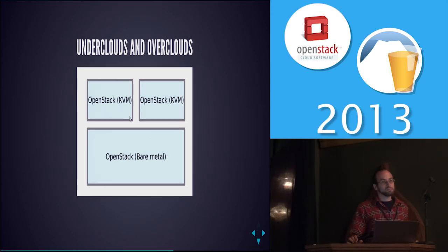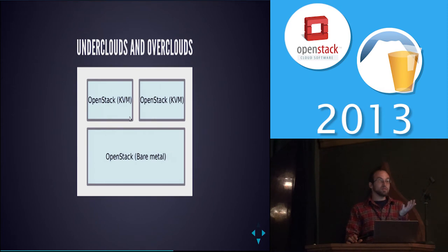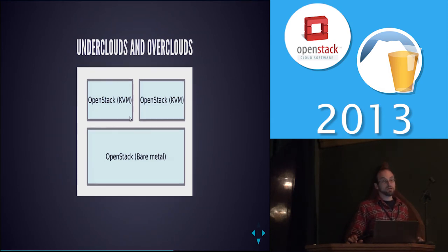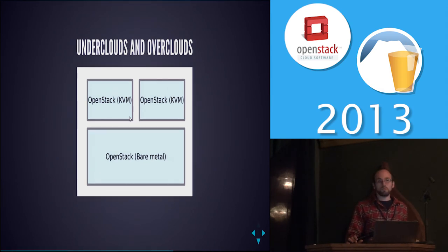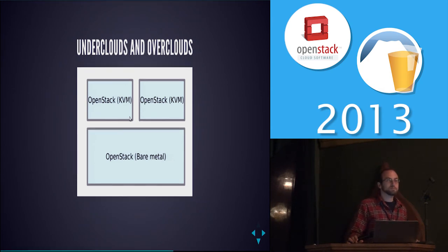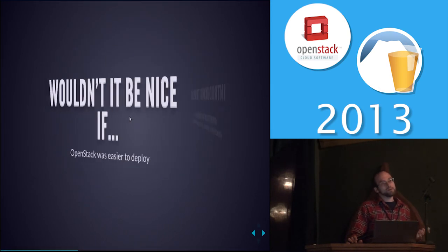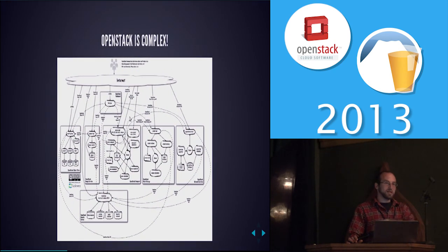If you're going to deploy OpenStack today, are there steps you can take to make it easier to implement Triple O when it's ready? The honest answer is probably no — you're going to have a whole different layer underneath for deploying and managing everything, which will be OpenStack, so you'll have to do some sort of migration. The real answer is: if you want to use this in the future, try to work upstream with us. Tell us what you want and we'll try to do it. This is an open source project; more feedback and more people is welcome.